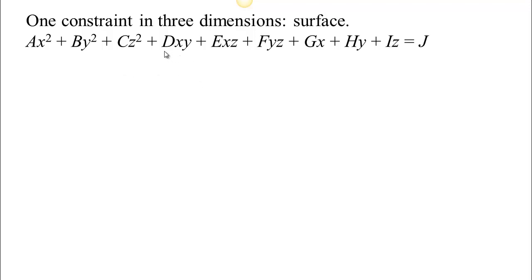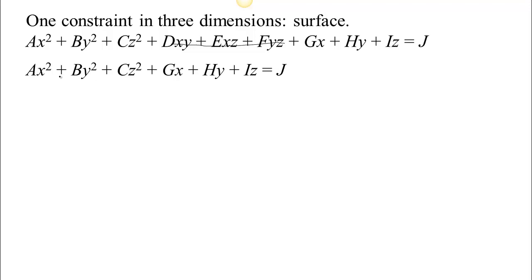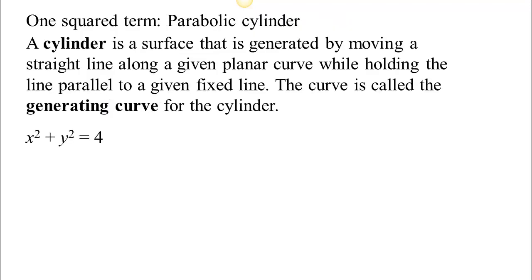From something mentioned earlier, if you have these cross terms, they could actually be rotated out. So we can rotate out those cross terms, and we're really talking about a simplified form. We want to break it down into just a few cases so we can consider all the different shapes that might occur.